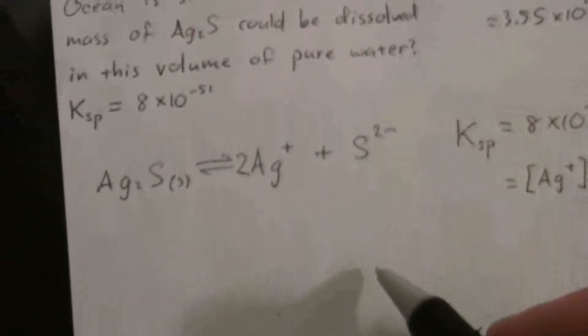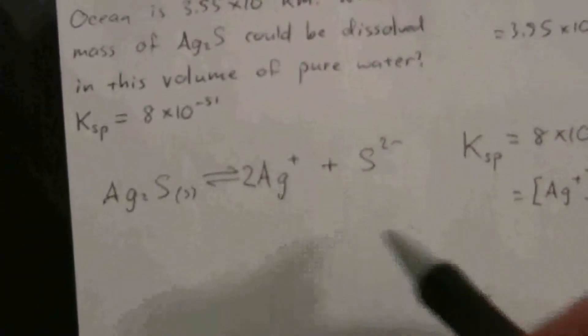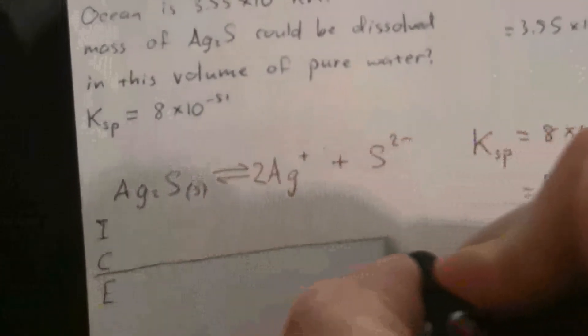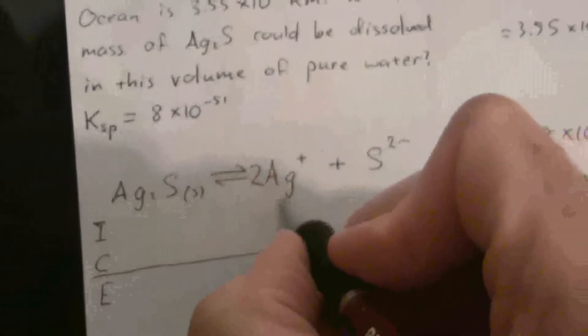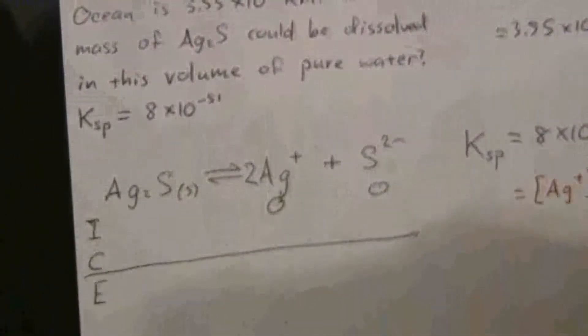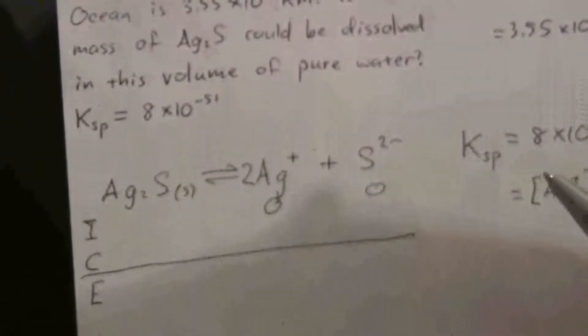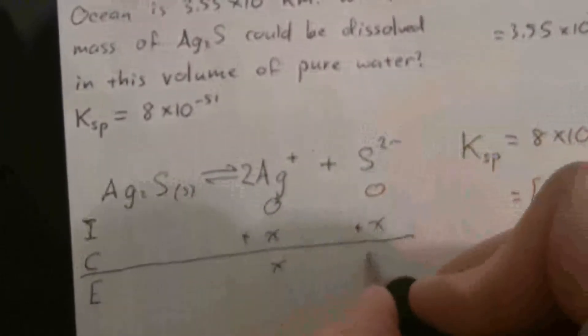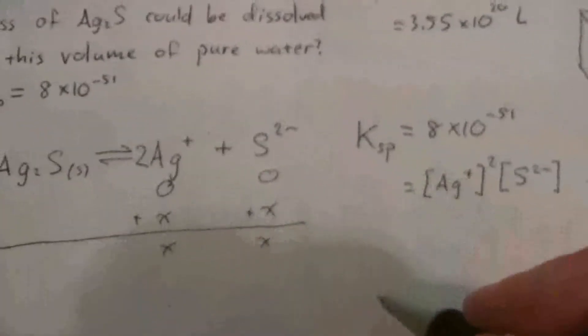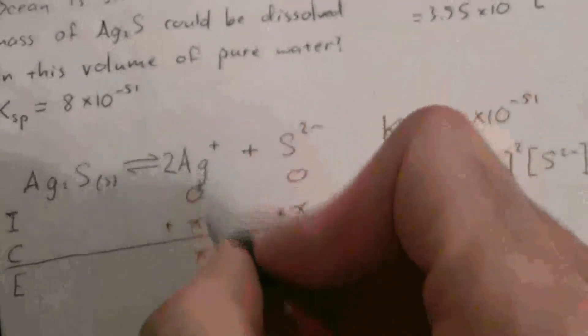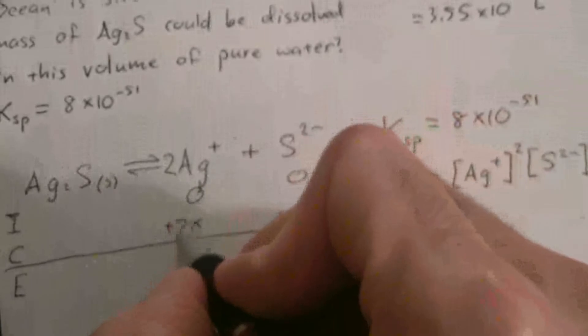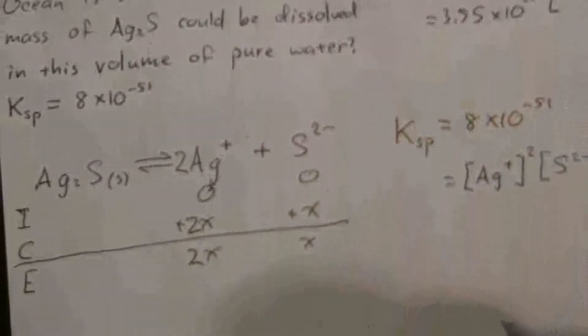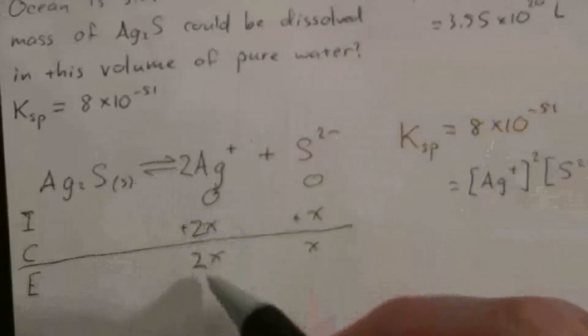What we want to do is find out what the equilibrium concentrations would be. We're going to assume since we're starting with pure water there's nothing there. So their change is going to be a positive x and that equilibrium will have x. Okay I made a mistake here. I have to put in that 2. Carry that down and so we'll have twice the concentration for our silver ions.